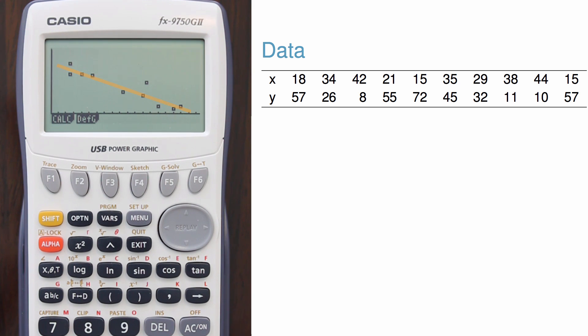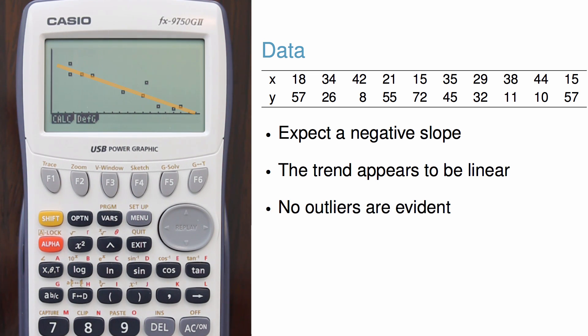A downward trend is evident in the data, so I should expect a negative slope when fitting the line. The trend also looks reasonably linear, and there are no outliers that are a cause for concern.